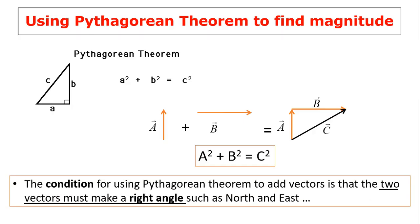One thing you need to remember is, in order to use Pythagorean theorem, the two vectors have to be perpendicular to each other. The two vectors have to make right triangles, such as north and east, north and west, south and east, or south and west.